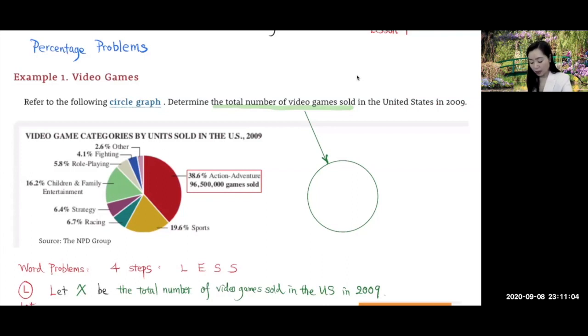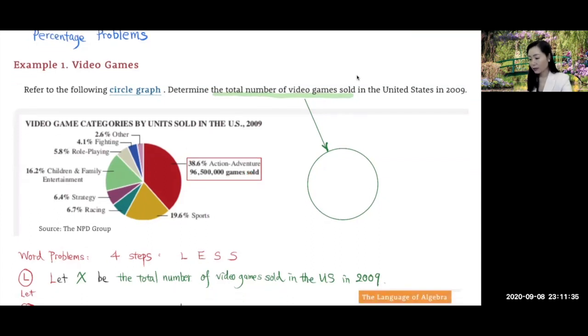Now out of all these video games, 38.6% of those games are action-adventures. And in this section for action-adventures, there are 96,500,000 games. Now the question is we're trying to determine the total number of video games sold in the United States in 2009.